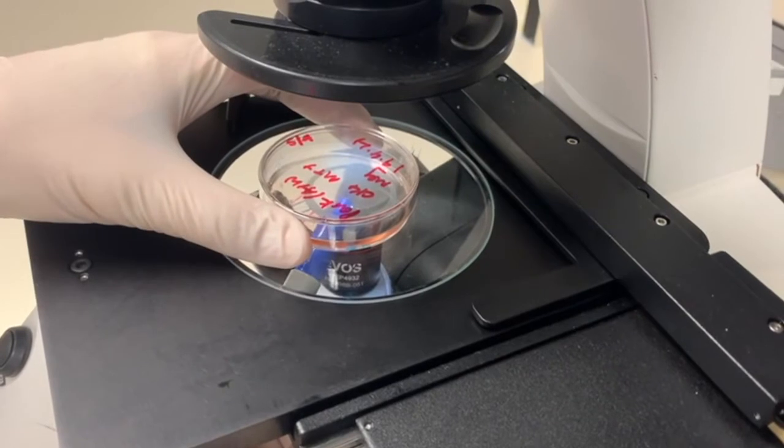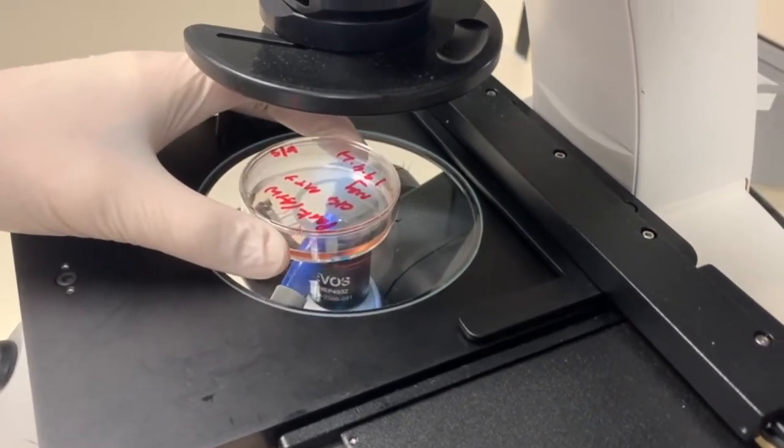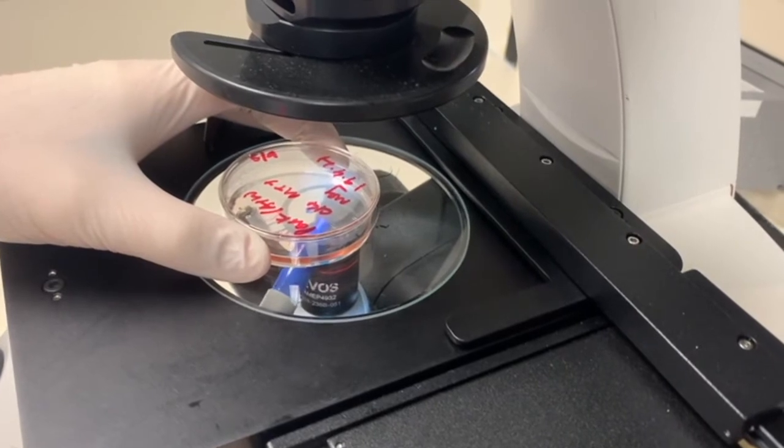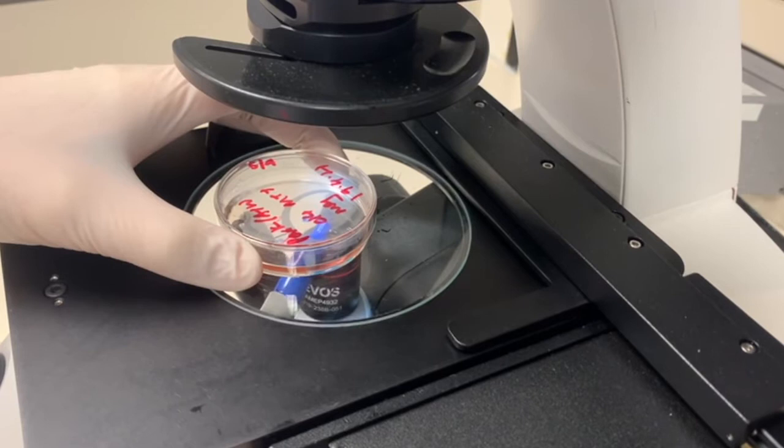Using 4x magnification, look for spontaneously differentiated cells within the IPSC culture. The low magnification makes it easier to scan the plate in an efficient manner.